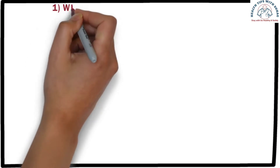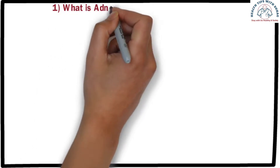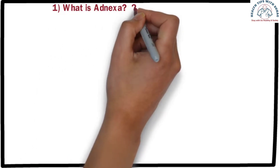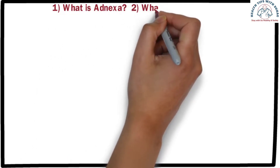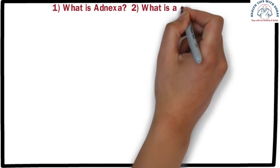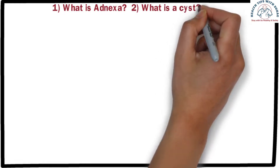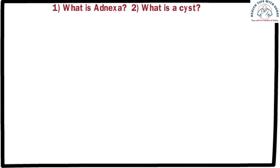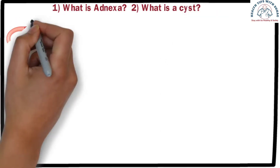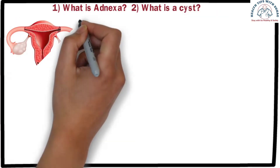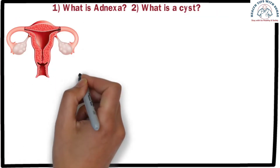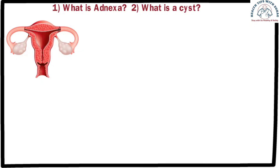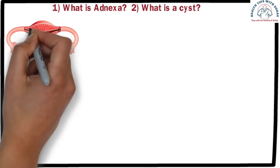Before that, we need to understand two things: number one, what is adnexa, and number two, what is a cyst. First, let's focus on the image of the female reproductive system.